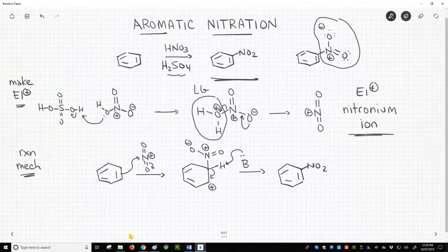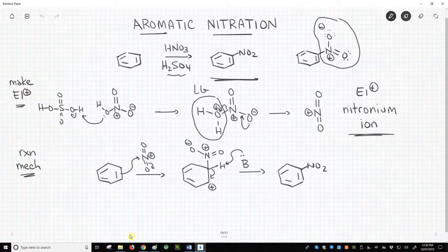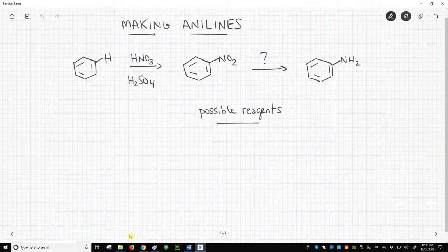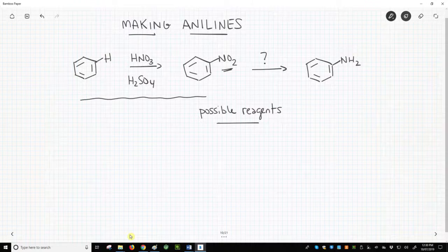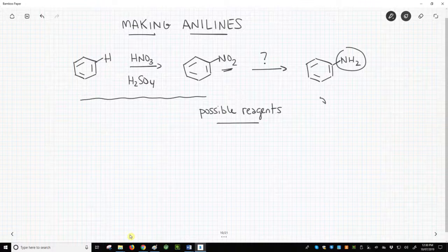Nitro groups are useful on their own, but they're often transformed into other groups. So here is a nitration, and the nitro group is often converted into an amino group. Aminobenzenes are called anilines.